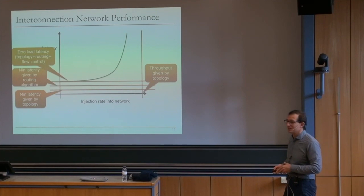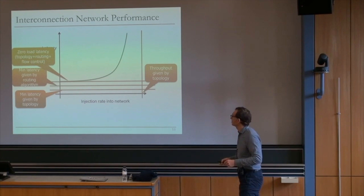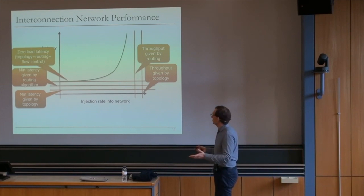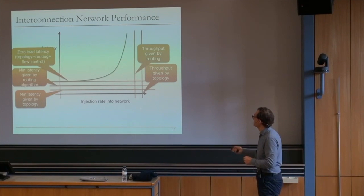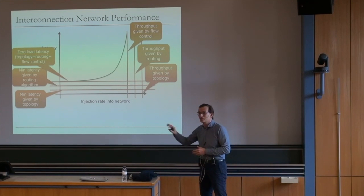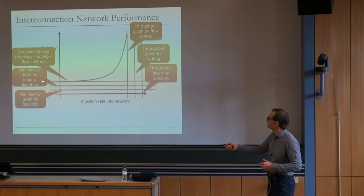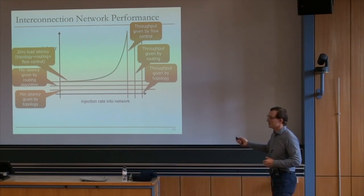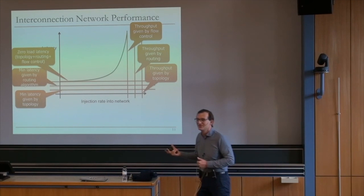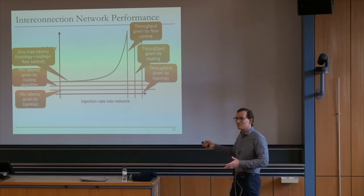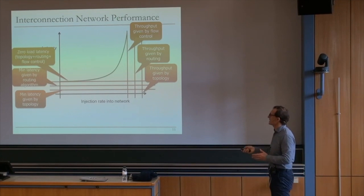Performance metrics include average packet latency, maximum packet latency, round-trip latency (request-response), and saturation throughput. More recently, especially in on-chip networks, work has focused on application-level and system-level performance, which is affected by interference among threads and applications. If you think about applications, there may be a different way of designing networks — designing to the actual requirements of real workloads rather than synthetic traffic patterns.